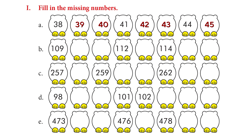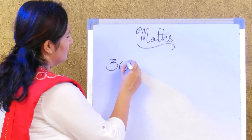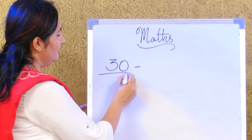Let's move on to the second exercise on page 42: write the number names for the following numerals. The numerals are on the left side and you have to write the number names. Let's try an example — 30. How do you write 30? This is the numeral.